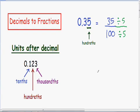After we simplify this fraction, in the numerator we have 35 divided by 5, which is just 7. And in the denominator we have 100 divided by 5, which is 20.